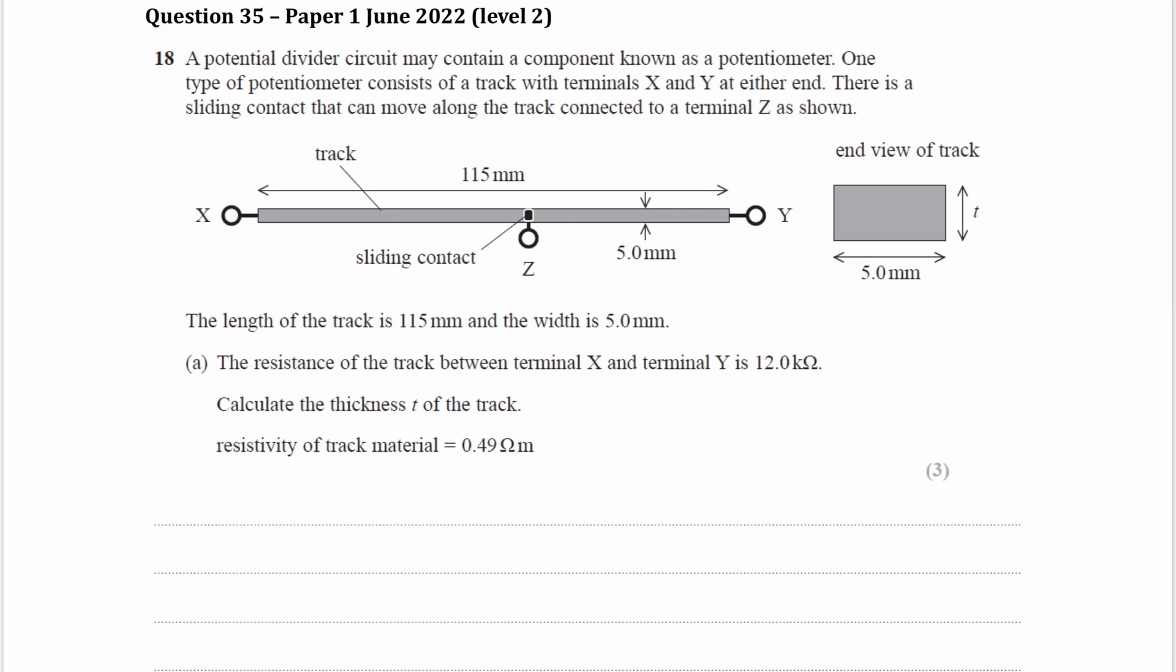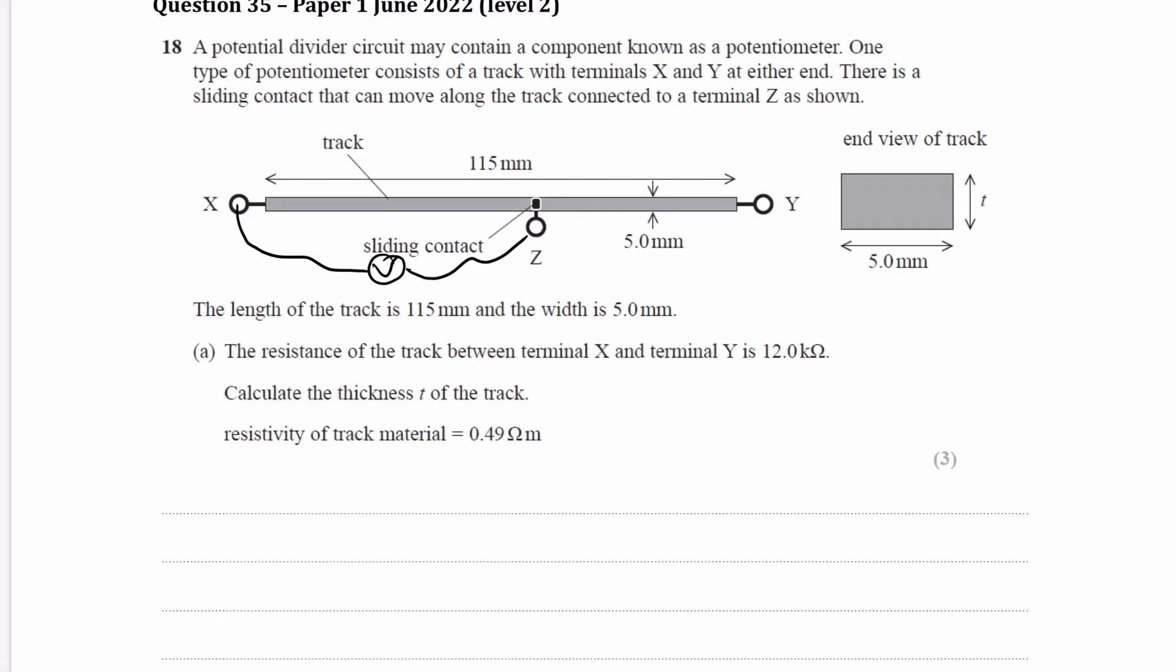This is our potentiometer. We have two terminals either end, X and Y, and then we have a sliding contact that moves along from X to Y. Then you can put a voltmeter in between those two terminals to measure the voltage across part of the resistor. Depending on how far along you move Z, you will pick up a smaller or larger voltage.